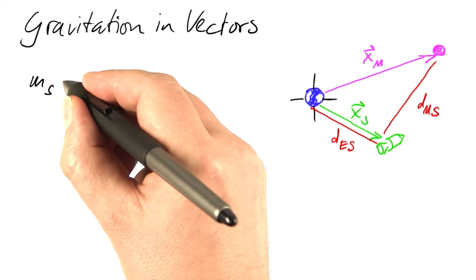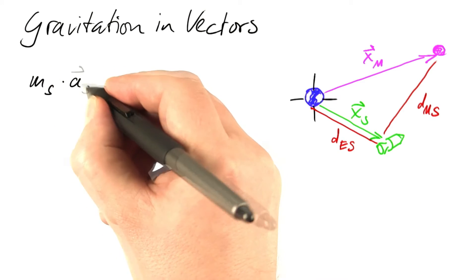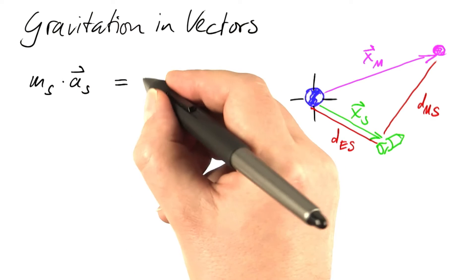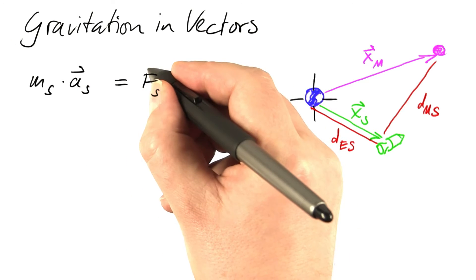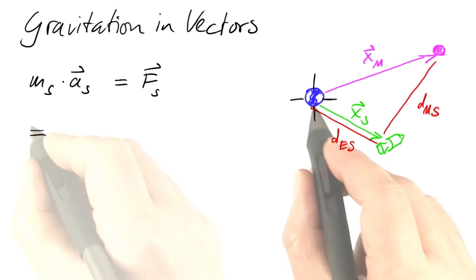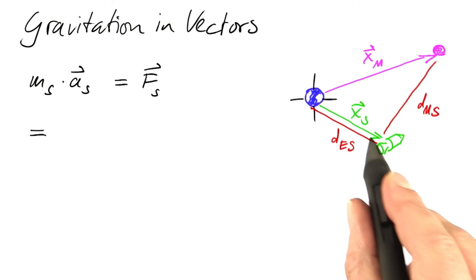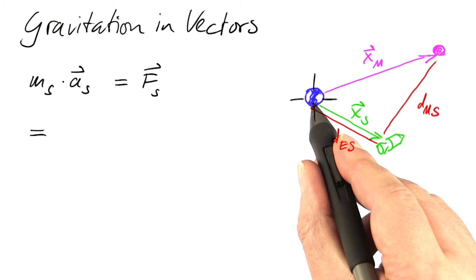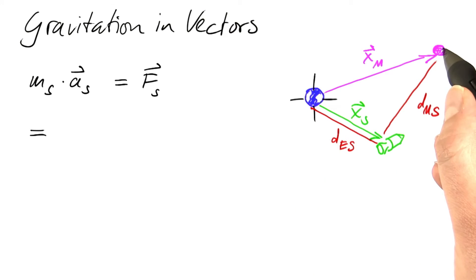Now we can put both of Newton's laws together. The mass of the spacecraft times its acceleration, as a vector now, equals the force that is exerted on the spacecraft. And this force stems from gravity. It has two components. One is the force that is exerted by the earth, the other is the force exerted by the moon.